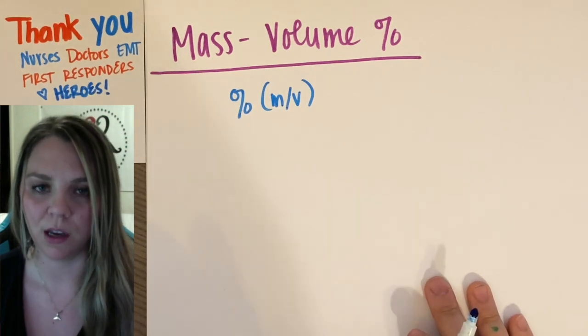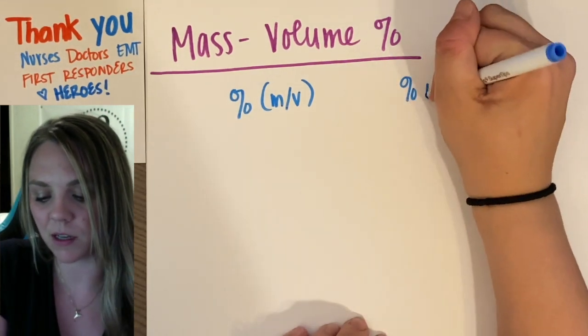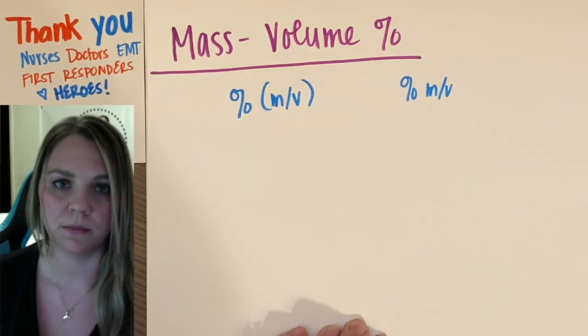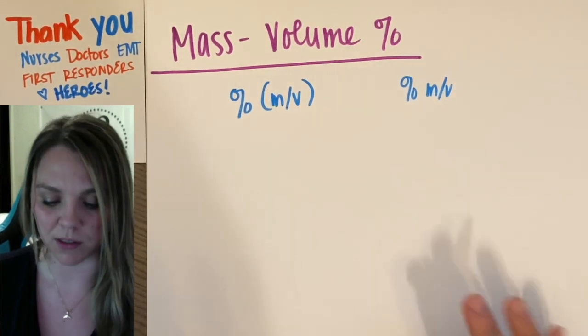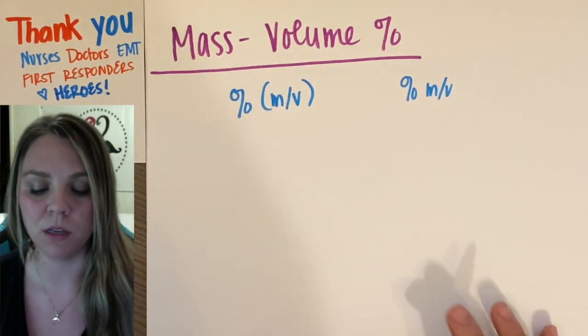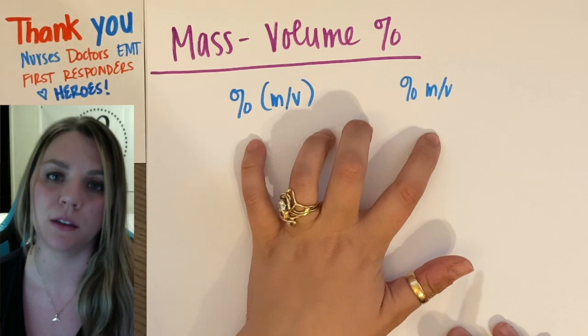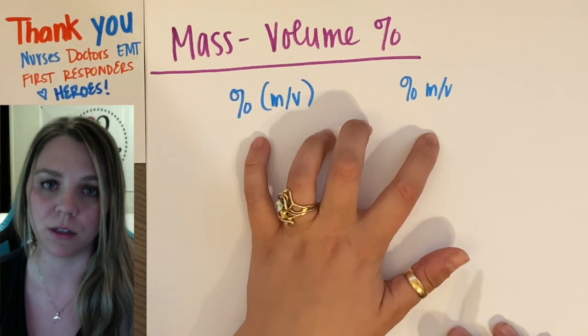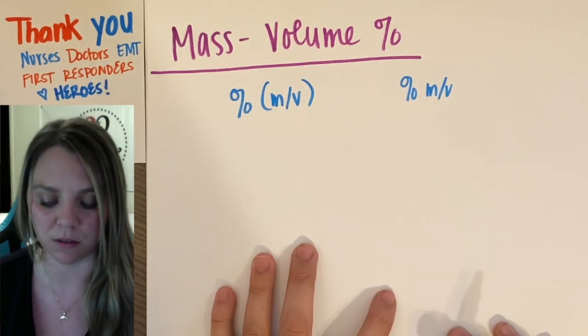And let's be honest, sometimes you'll see percent m v, because we can't take the time to write out the parentheses. But in general, mass per volume is super convenient, and it's widely used in medical settings, which is why it's really important that you understand how to use this.